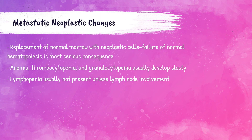When a certain cell type proliferates uncontrollably in the bone marrow, normal hematopoiesis of other cell types reduces. Patients can be anemic due to reduced red blood cell production, may develop thrombocytopenia (decreased platelets), or granulocytopenias depending on the neoplasm type. Lymphopenia is usually not present unless there is lymph node involvement, because lymphocytes mature in lymph tissue, not in the marrow where the neoplasm occurs.